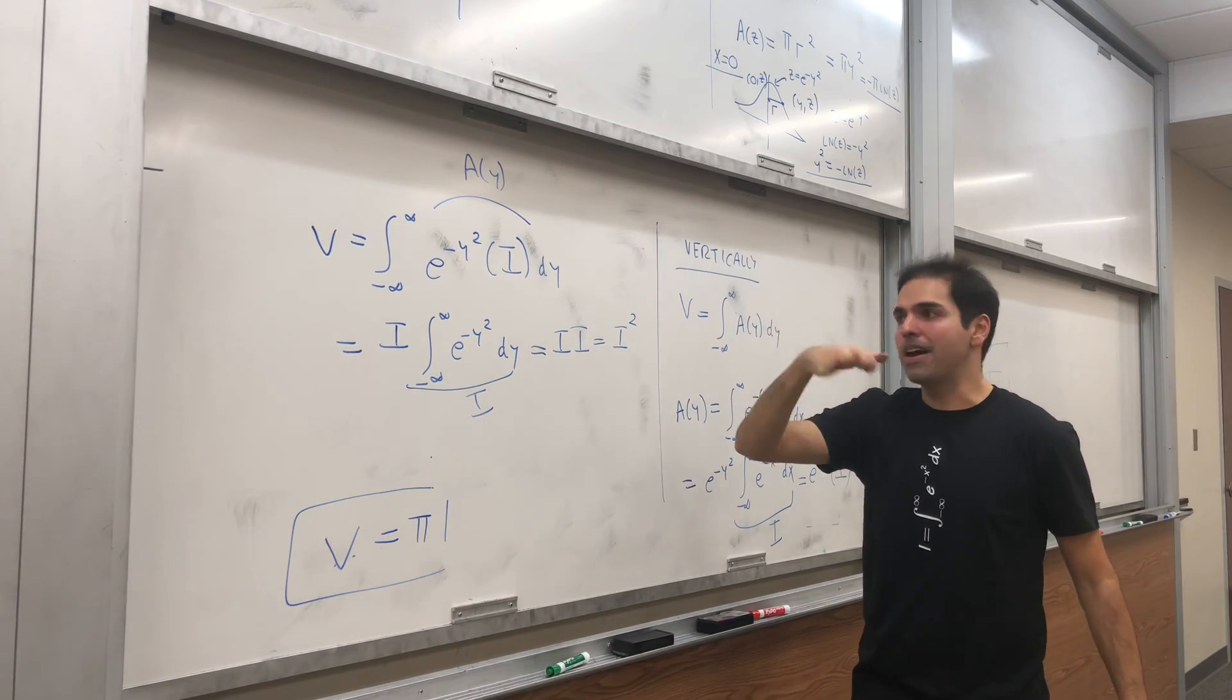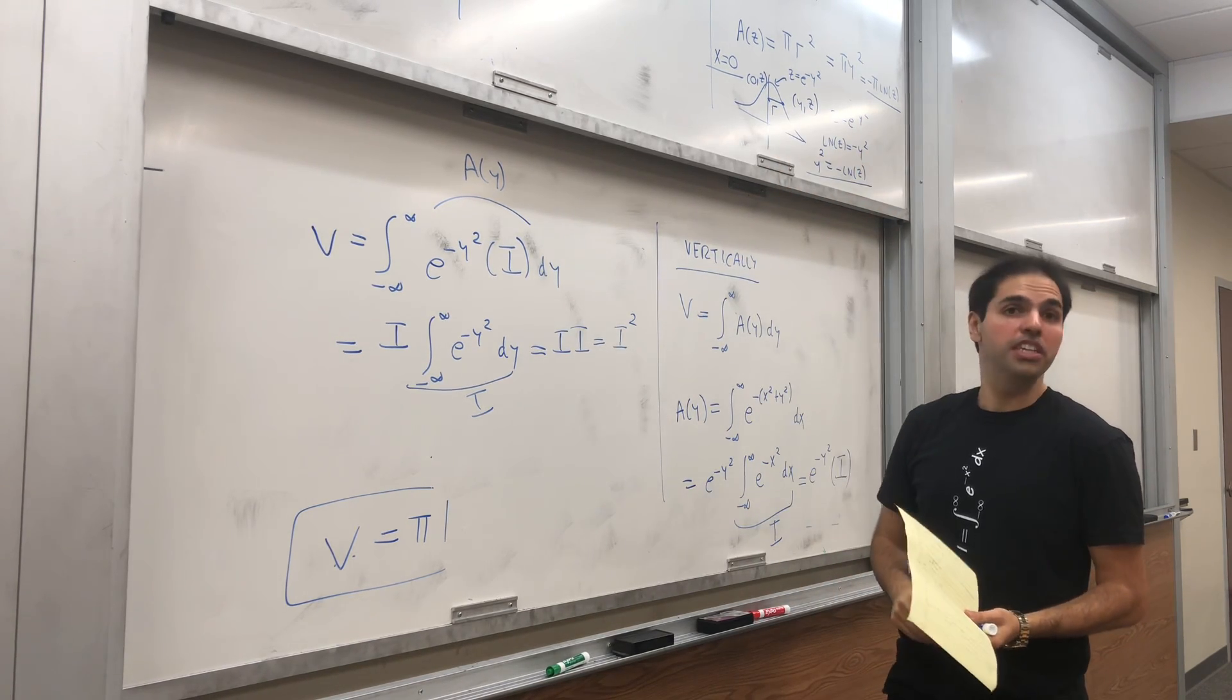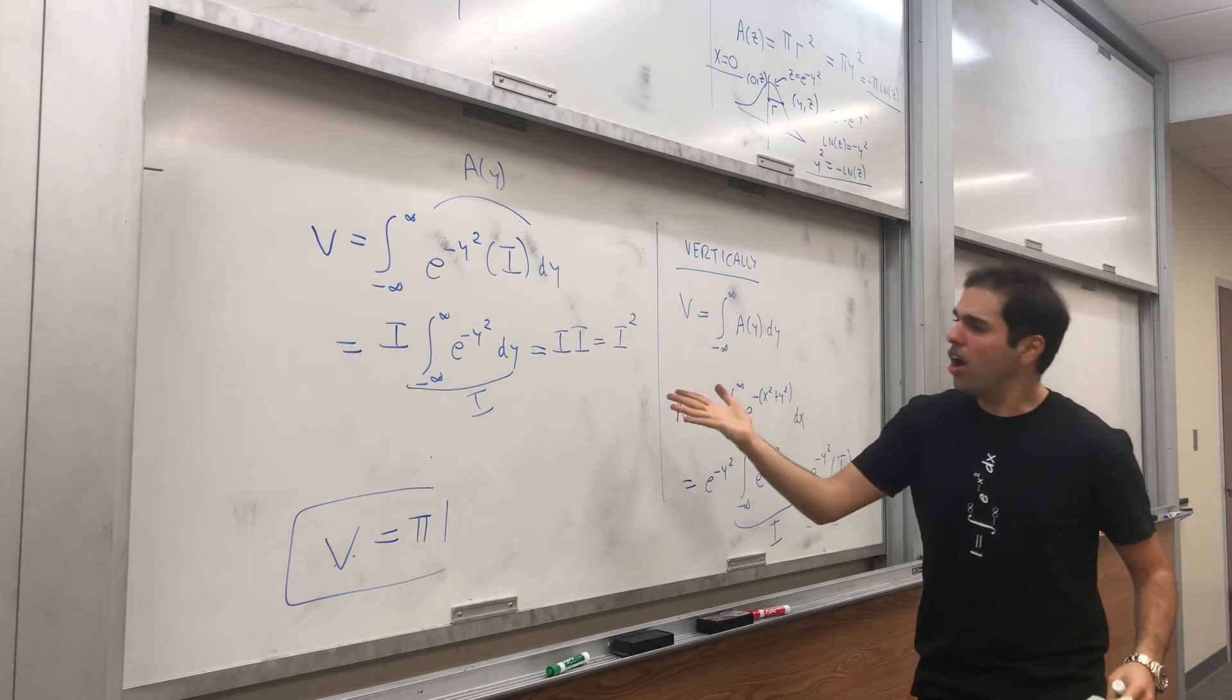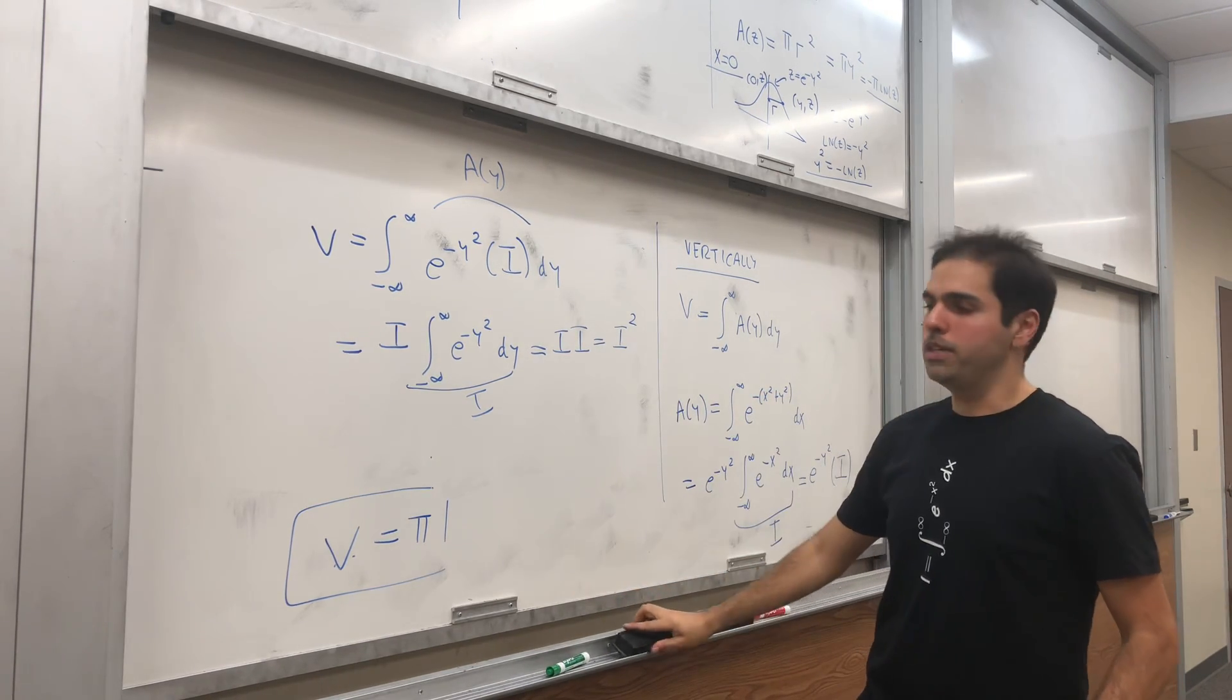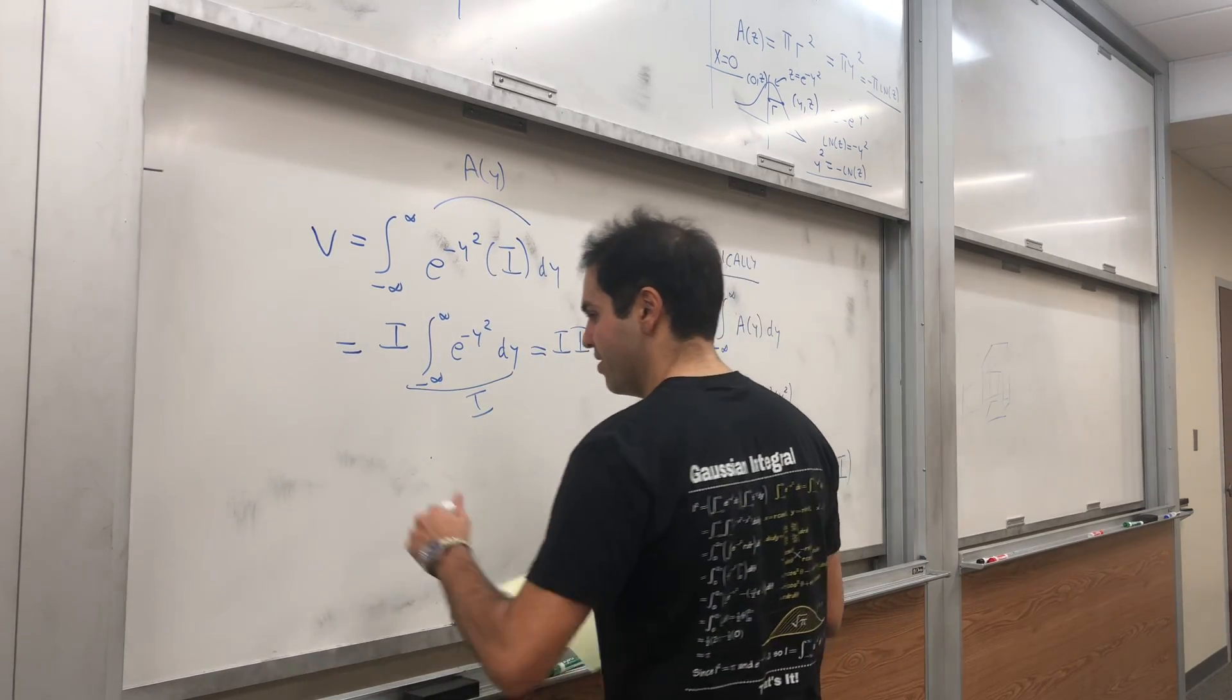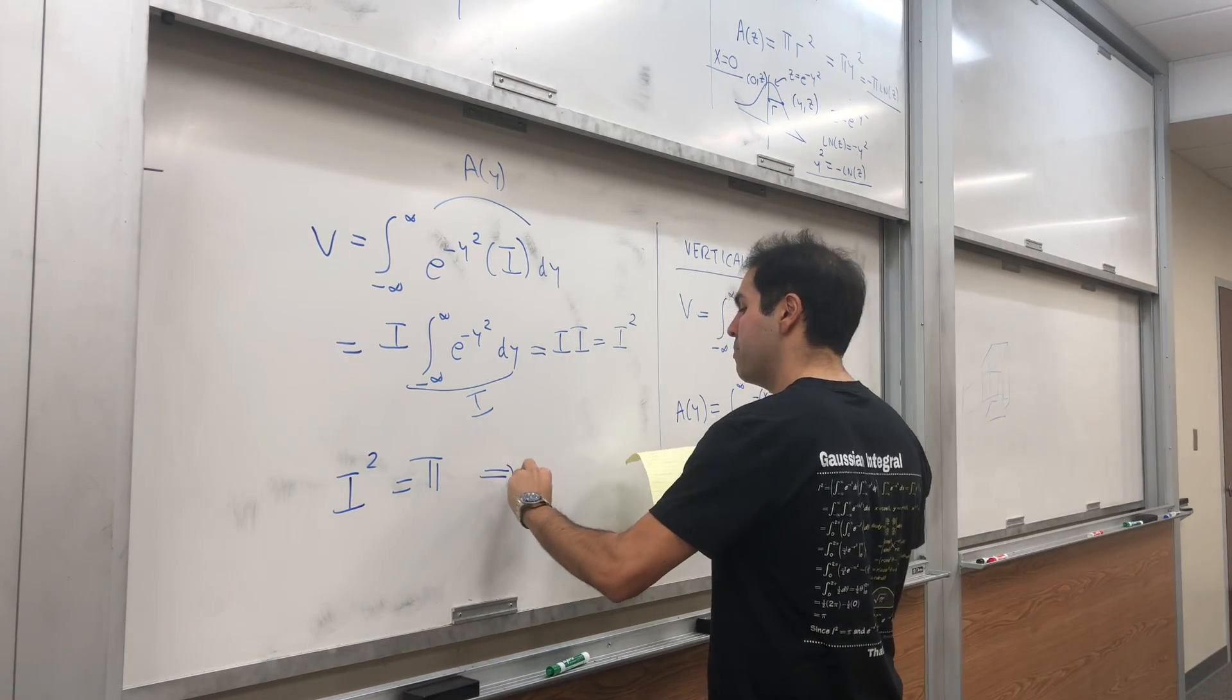On the one hand, the volume is π using the disk method. On the other hand, the volume is I² just by slicing vertically. Because they calculate the same volume, I² = π. Since I is positive, I = √π.